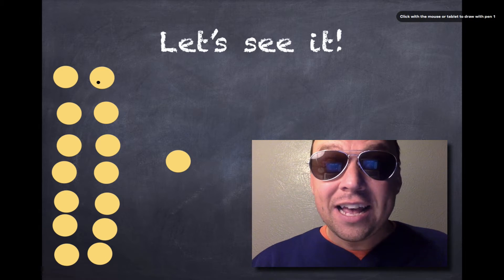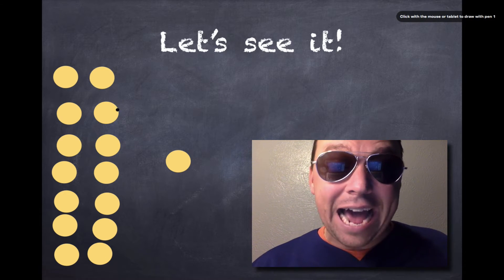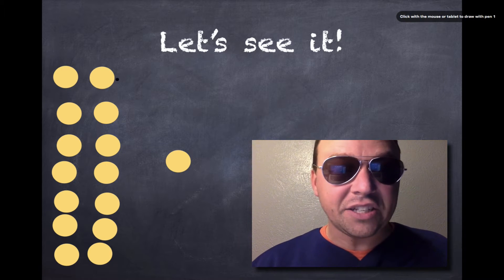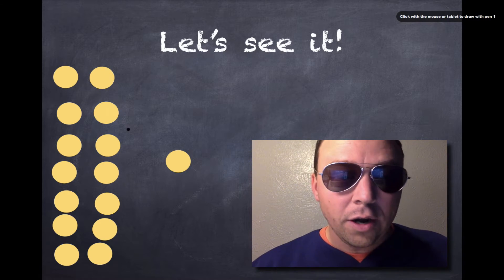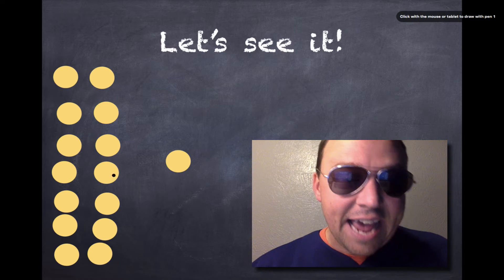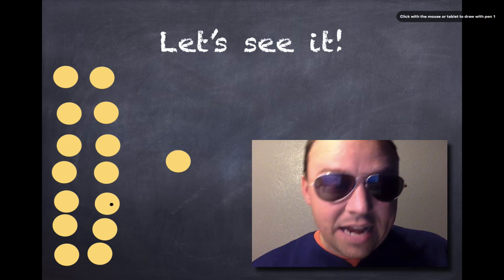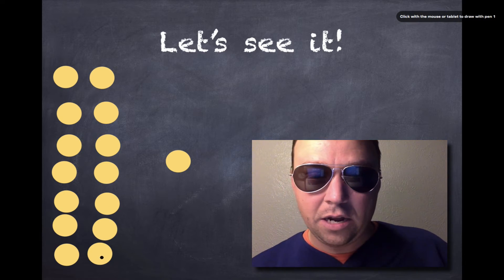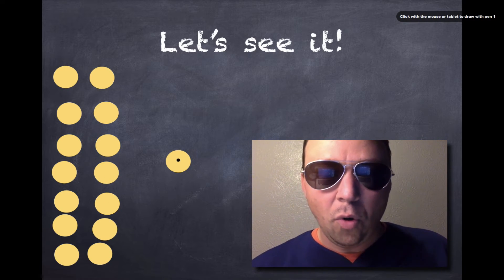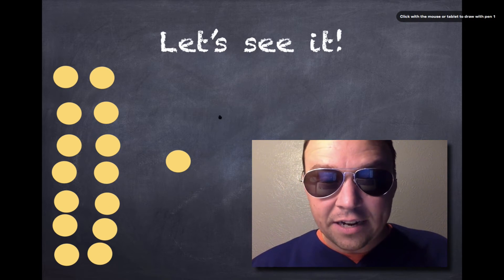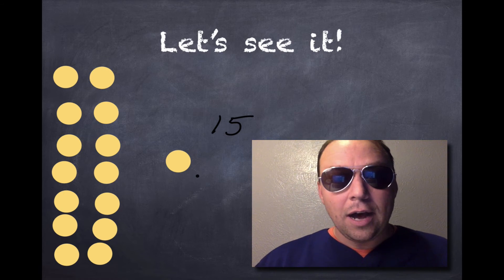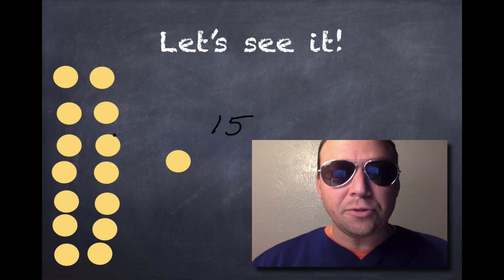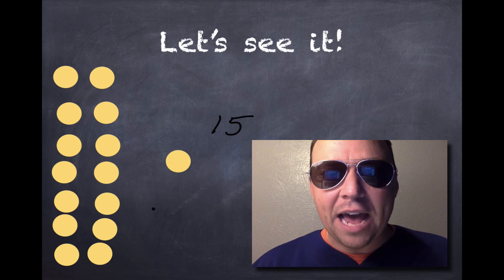Now that I've grouped things by twos, I can skip count by twos and know how many objects I have. I'm going to pretend like these are pennies. Let's count by twos: two, four, six, eight, 10, 12, 14 — plus one more is 15. I have 15 yellow circles on this page, and I know that because I grouped them up by twos and skip counted.